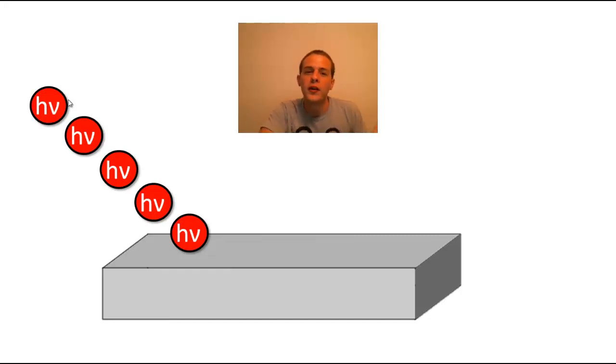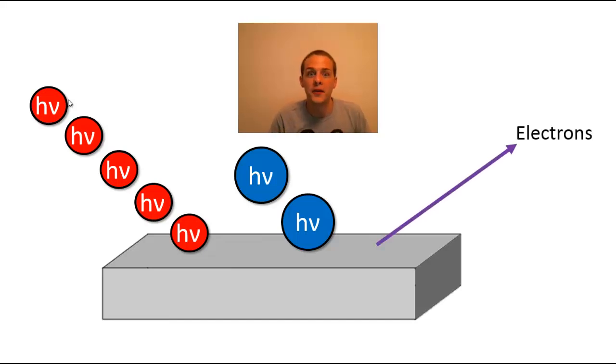But if you change the frequency of that light, so if you increase that frequency to say blue light, now you're dealing with photons that have much more energy. Now each of those photons has enough energy individually to remove electrons from that metal.